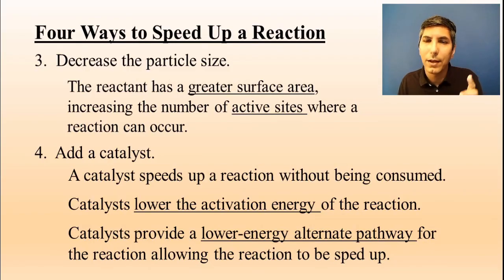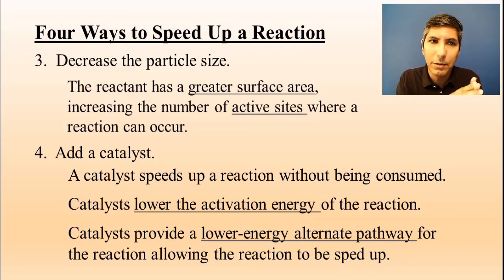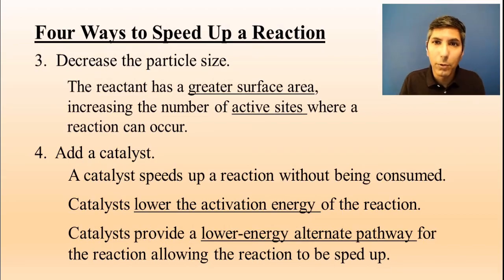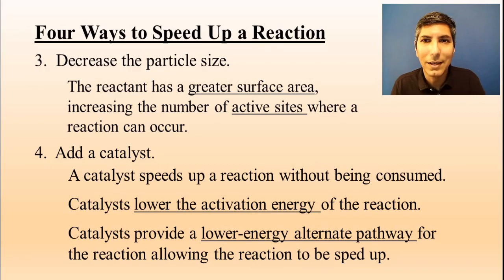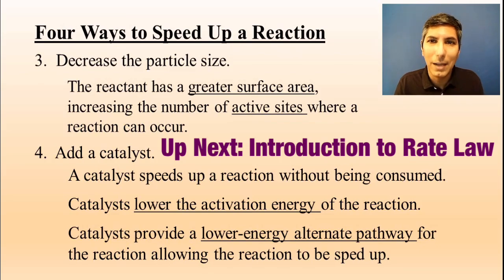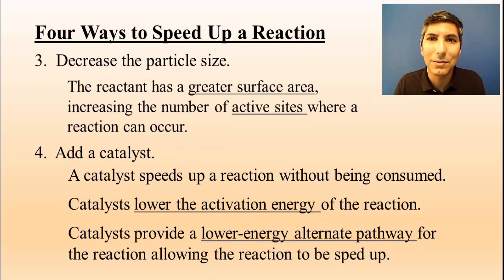So these are the four ways to speed up a reaction: raise the temperature, raise the concentration (which is kind of the same as increasing the pressure), decrease the particle size, and add a catalyst. I hope you've learned something about the fundamentals of chemical kinetics. My name is Jeremy Krug, and I hope to see you in my next video about chemical kinetics as we move forward with Unit 5 in AP Chemistry.